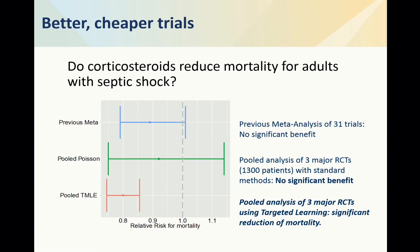Targeted maximum likelihood combined with the super learner is then what we can use to reanalyze these data sets. Now you suddenly see that the pooled result at the bottom shows a relative mortality of significance. So there actually seems to be a real benefit, in spite of the 31 randomized trials not showing it initially.